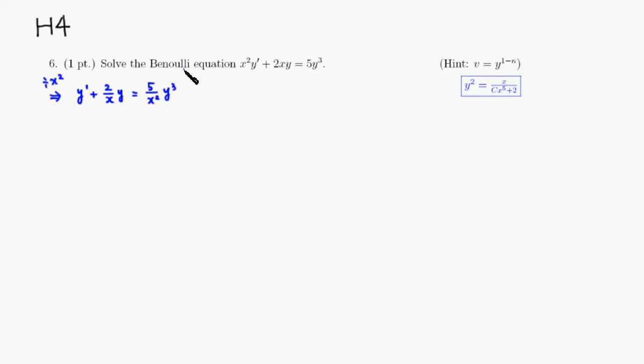So, in this case, n shows up here, so n is 3, so the substitution would be, we let v to be y to the 1 minus n, so 1 minus 3, so it's negative 2.